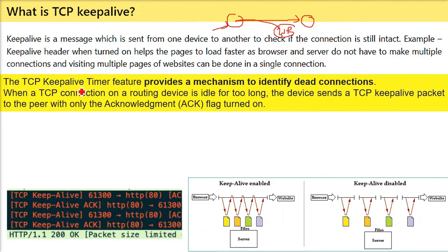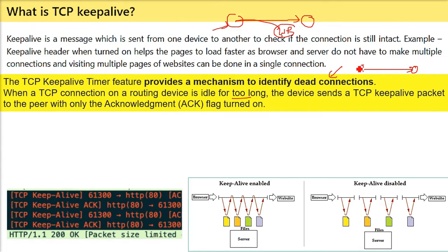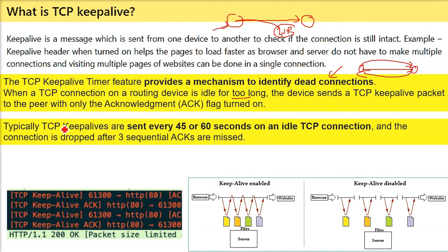TCP Keep Alive — this timer feature provides a mechanism to identify dead connections. When a TCP connection on a routing device is idle and not working for too long, the device sends a TCP Keep Alive packet to the destination party with only the acknowledgement flag turned on, just to keep things alive and check whether the connection is still there or not.